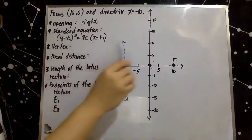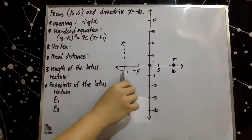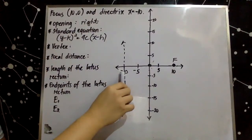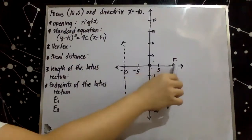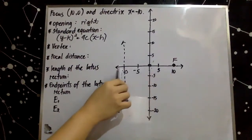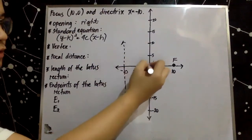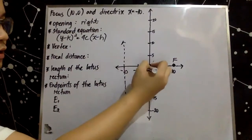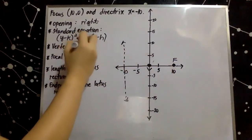We are given the focus and directrix. Take note that the vertex is halfway between the focus and directrix. Thus, the vertex is located here at the origin.